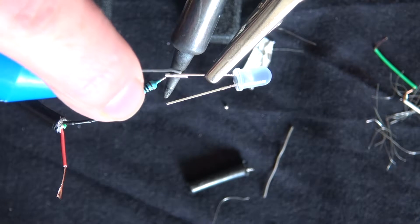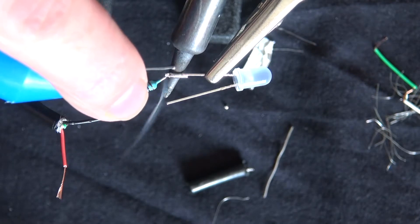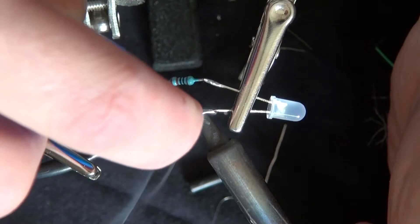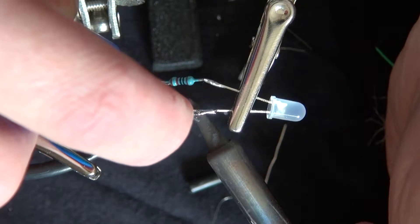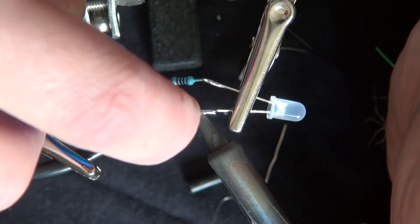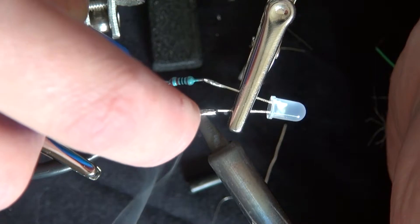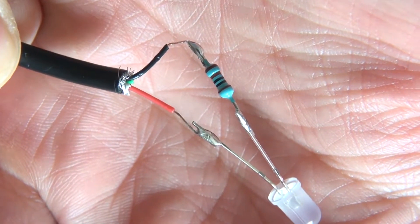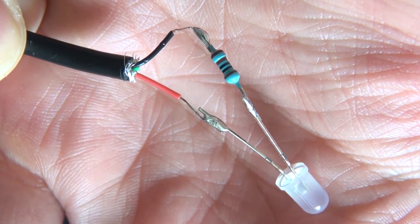Then solder the resistor to the LED in the correct orientation, positive or negative. In this case, it's negative. Now take your positive wire and solder it to the LED. There you have it, fully soldered together and ready to be assembled.